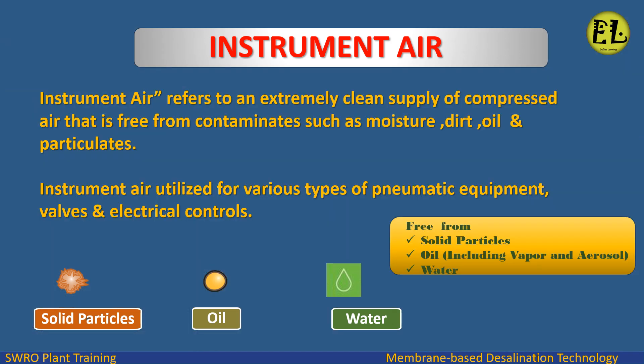Instrument air refers to an extremely clean supply of compressed air that is free from contaminants such as moisture, dirt, and oil particulates. Instrument air is utilized for various types of pneumatic equipment and valves, electrical controls, and must be free from solid particles, oil including vapor and aerosol, and water.